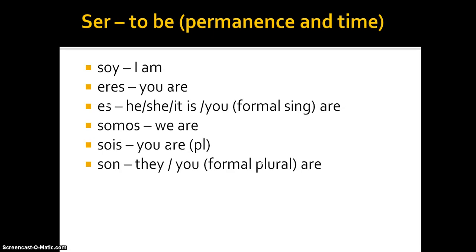Now let's look at the verb ser, to be — used for things that are permanent and also for time. For more on ser versus estar, see my video on those. The conjugation: soy means I am; eres means you are; es means he, she, it is, or you formal singular are; somos means we are; sois means you are plural — note eres is singular informal, sois is plural informal; and son means they are, or you formal plural are.